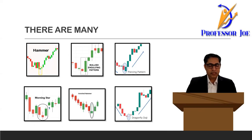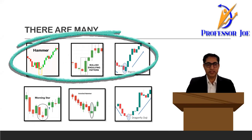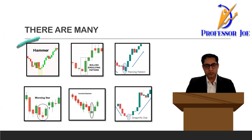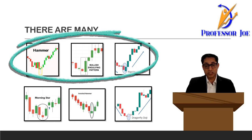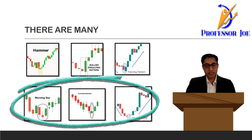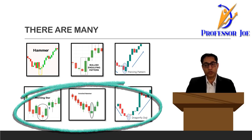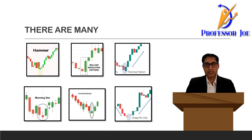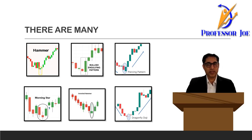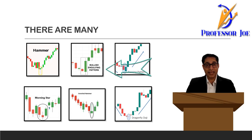In this video, we are going to understand the most important bullish candlestick patterns. There are many bullish candlestick patterns like you can see on the screen — there is hammer, there is bullish engulfing pattern, there is piercing pattern, there is morning star, there is inverted hammer and there is dragonfly doji. So there are so many candlestick patterns used by traders in intraday, long-term, and swing trading to enter into trades. But in this video, we are going to specifically cover two: the bullish hammer and the bullish engulfing pattern.